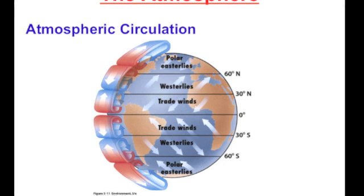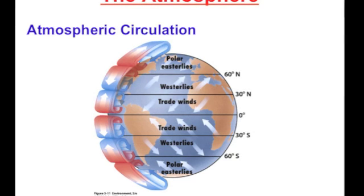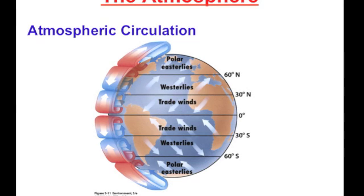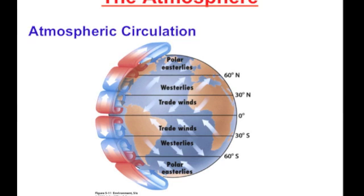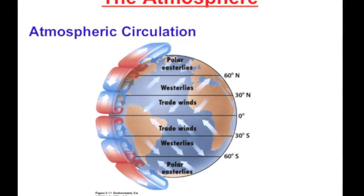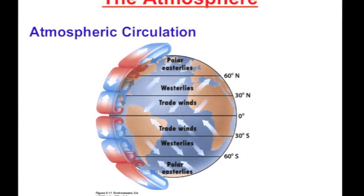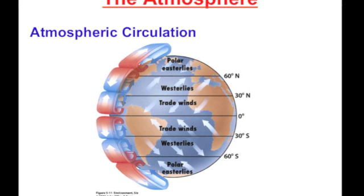This warm air cools and falls as it does so. This cooling happens at around 30 degrees north or south of the equator. So you can see that on this picture right here, it's happening right about 30 degrees north and south of the equator.